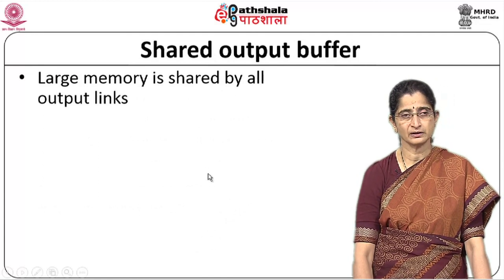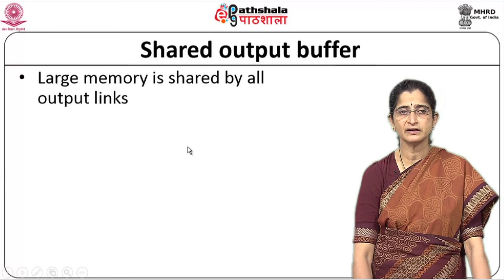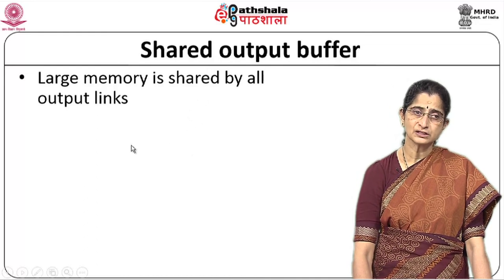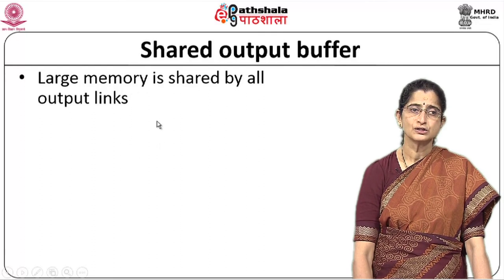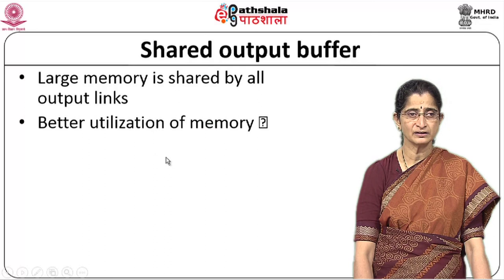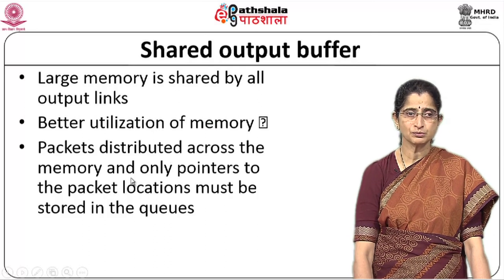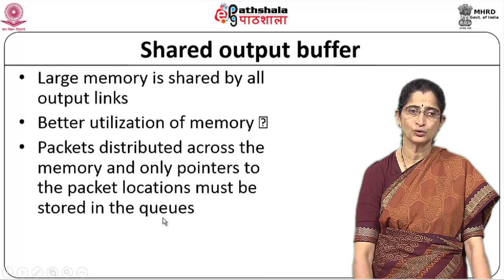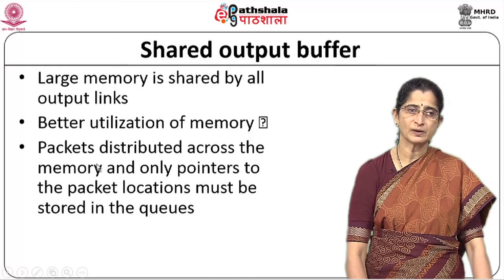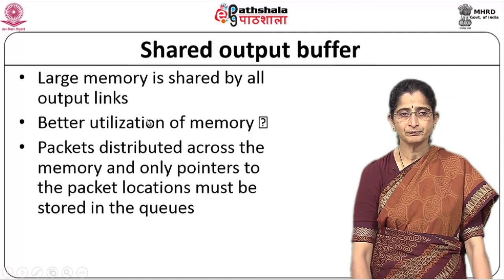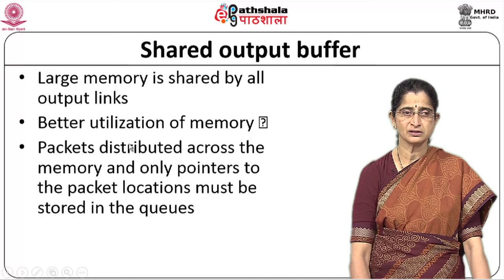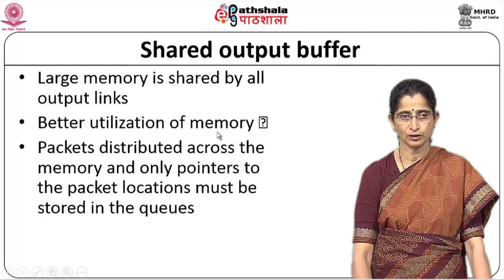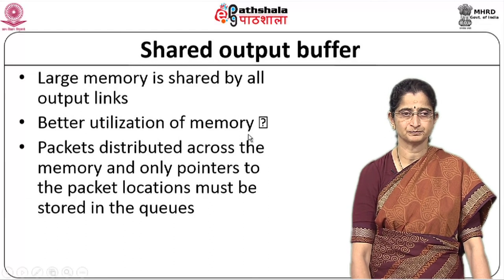Another option is the shared output buffer, where a large common memory is shared by all output links. This provides better utilization of memory; packets are distributed across memory and only pointers to packet locations need to be stored in the queues. However, memory access speeds could also become a bottleneck in this case.